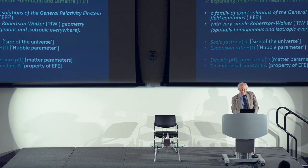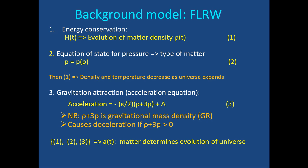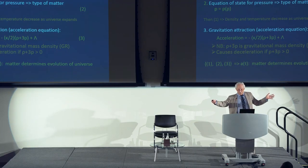The background model has three equations: an energy conservation equation, an evolution equation where the Hubble parameter determines how matter densities decay as the universe expands, and the equation of state p(ρ) describing the type of matter. Putting these together tells you how density and temperature decrease as the universe expands. For ordinary matter, density and temperature both decrease as the universe expands, meaning going back in time, things were hotter and denser.